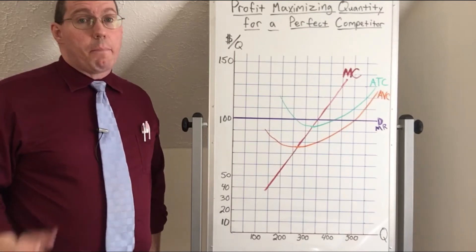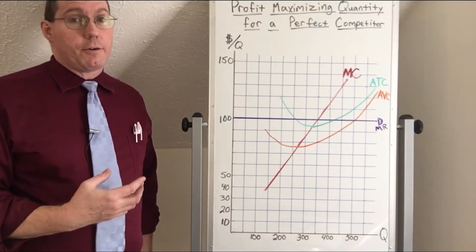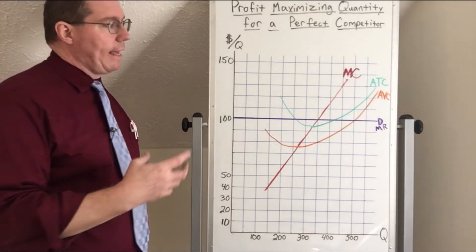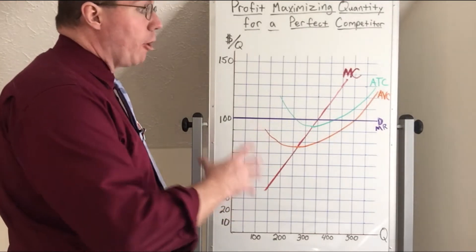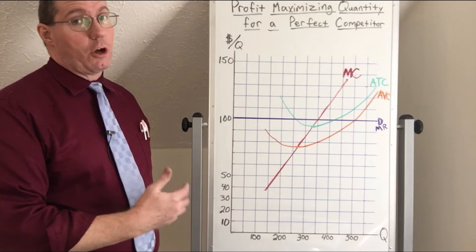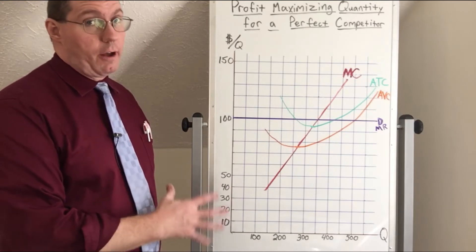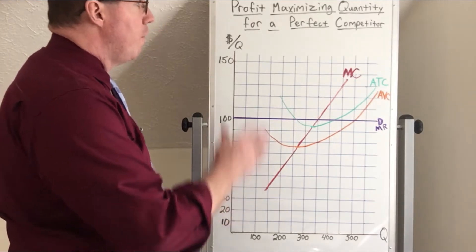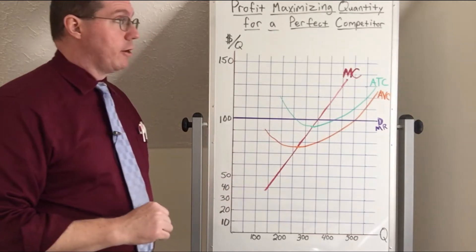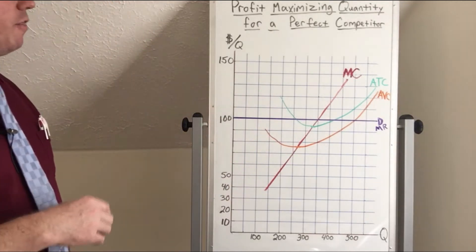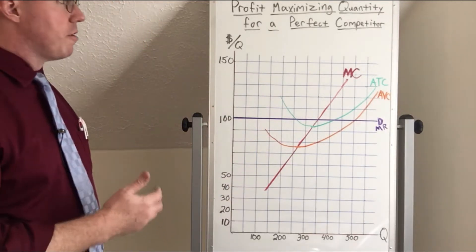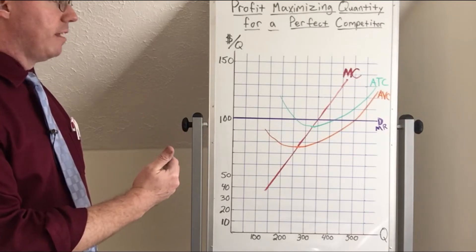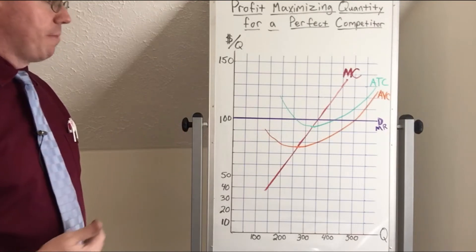Now that we understand that perfect competitors have a horizontal demand curve, we can look at the market structure graph — we're going to call it the firm structure graph now, because this is an individual firm for a perfect competitor. We can try to identify their costs and also identify how they find the profit maximizing quantity.